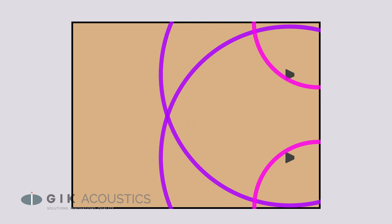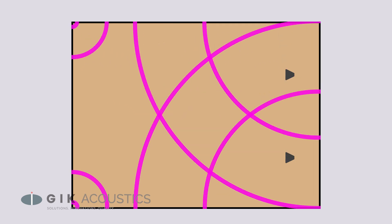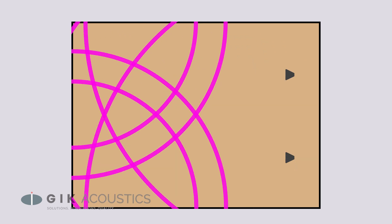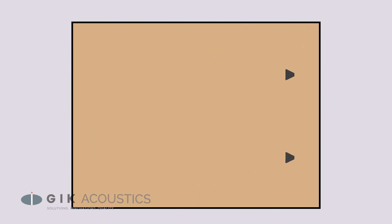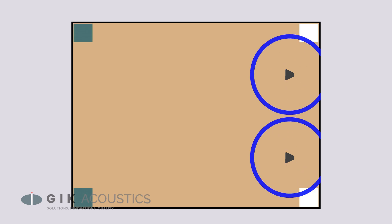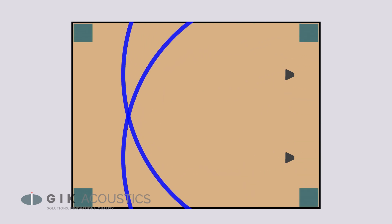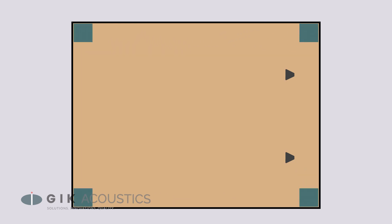Even if you lowered certain volumes of frequencies, this could just allow other frequencies to build up even more. By absorbing these reflections, we can keep them from lingering in the room and mixing with the original audio source.